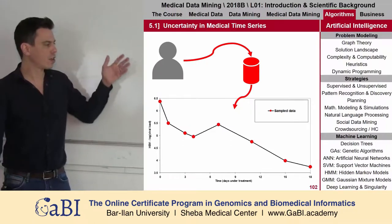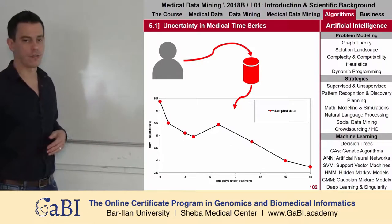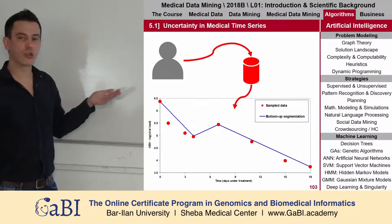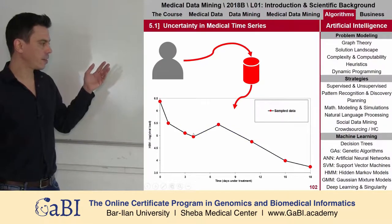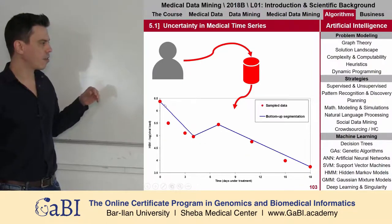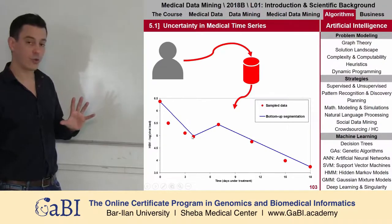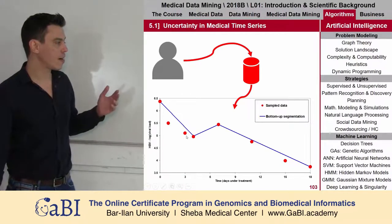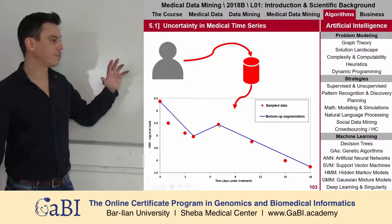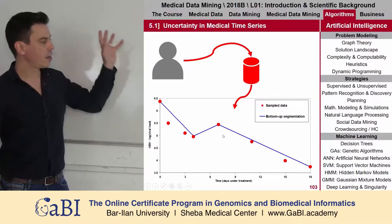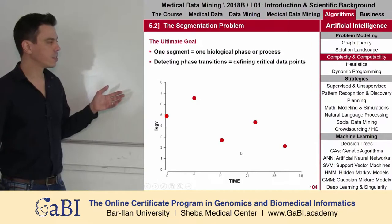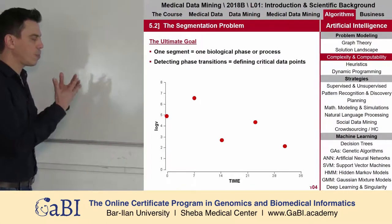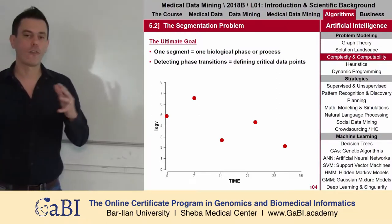We don't know what happened between two different time points. What we usually do is just connect the dots. This is a kind of interpolation that does not necessarily represent the real situation in the body, and this is very common — you've probably seen hundreds of graphs like this. The interpretation could be something like this: instead of fluctuations of the viral load, maybe we have one phase of decrease because the immune system was able to fight the virus.